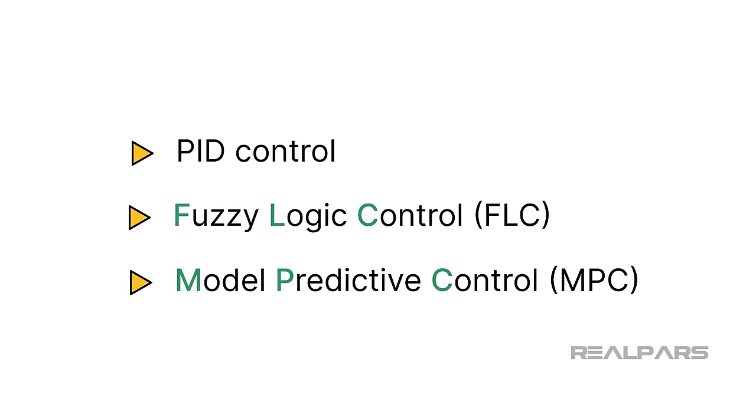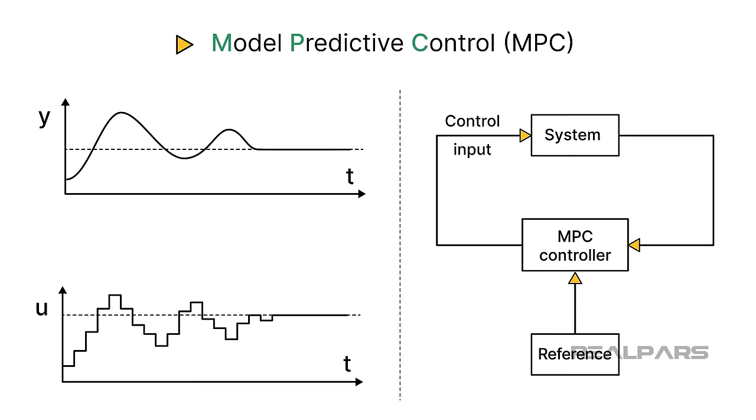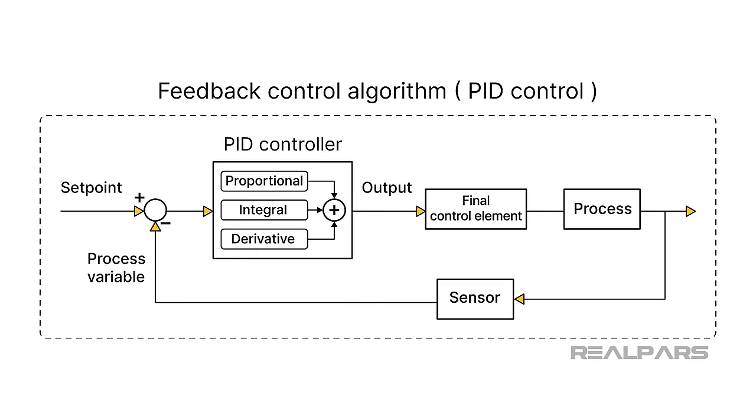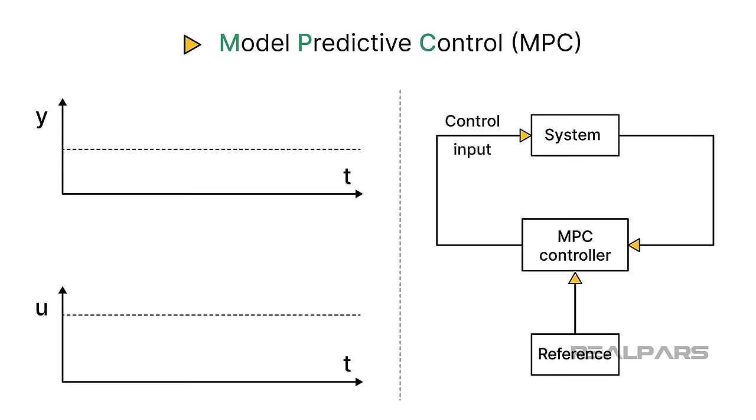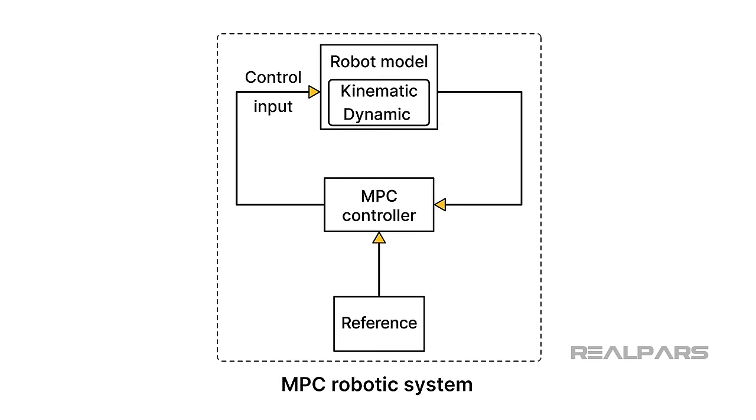Next up for discussion is Model Predictive Control or MPC. Model Predictive Control or MPC is a feedback control technique that uses a mathematical model to predict the behavior of the process variable. In contrast to a PID controller that automatically adjusts the control output based on the input data, an MPC controller is a control algorithm that predicts the future behavior of a system based on a mathematical model. It utilizes this model to optimize and generate control actions. The predictive nature of MPC makes it a powerful and widely used control strategy in many industrial applications. Let's look at a block diagram of MPC for a robotic system.